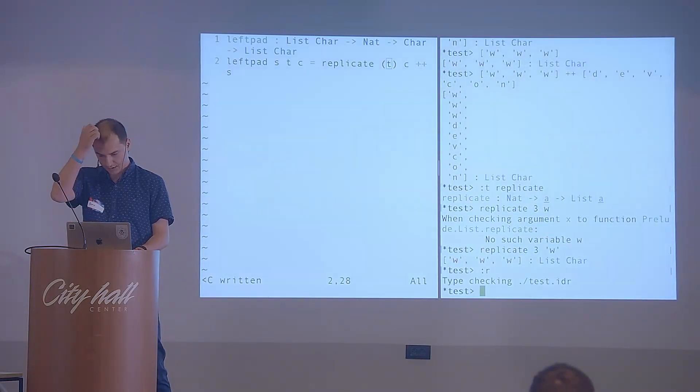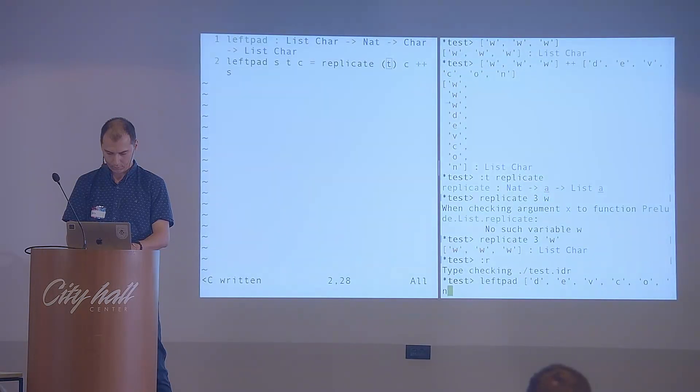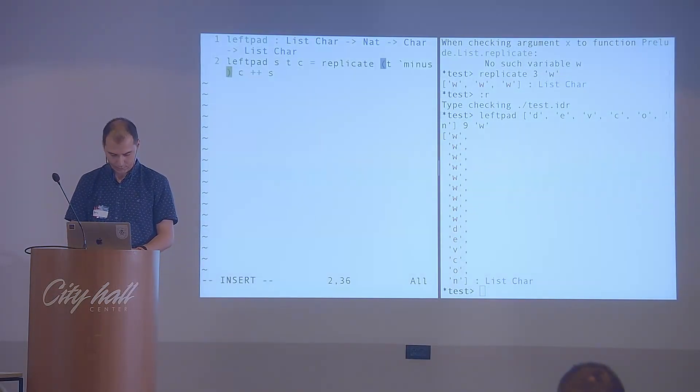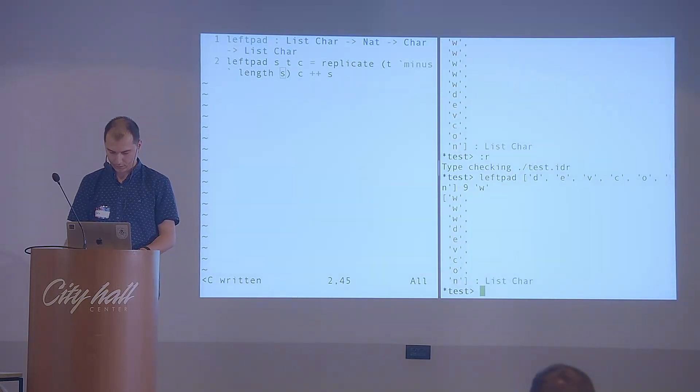We want to replicate it. So we have the target, which is like nine, the total length of the string. But let's try to do this and see what we get. I will use colon R to reload the changes that I did. And I forgot to mention that colon T is a way to query Idris, to tell you what a particular type function has. So if we write left pad defcon of target line with w, we get a lot of w's. So this is the incorrect length. What we wanted to do was the final length should be nine, not append w nine times.